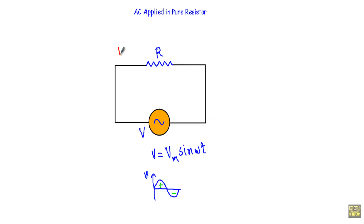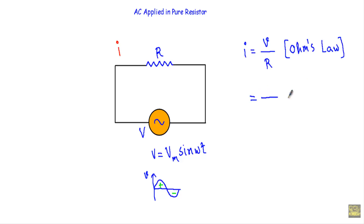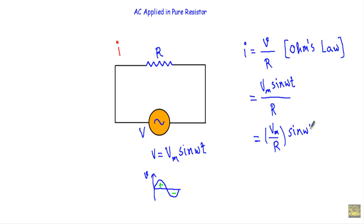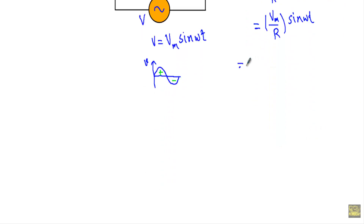Let's say the current flowing in the circuit is the alternating current small i. Applying Ohm's law, the alternating current I will be equal to the applied voltage V divided by R. Our alternating voltage V equals Vm sin omega t divided by R, which gives us Vm divided by R times sin omega t. Therefore, the equation of alternating current I equals Im sin omega t, where the maximum value of current Im equals Vm divided by R.